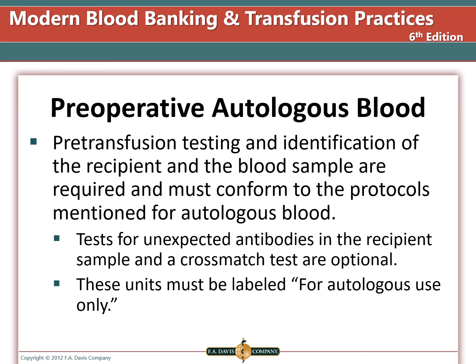When a patient has donated an autologous unit, it is important that these units are selected prior to giving allogeneic blood units. Pre-transfusion testing and identification of the recipient and blood sample are required. The test for unexpected antibodies and a cross-match are optional for autologous units. These units must be labeled for autologous use only and stored separately from allogeneic units, usually on a separate shelf in the refrigerator.